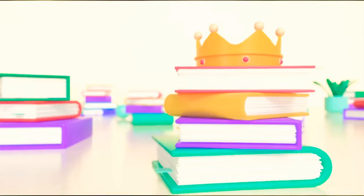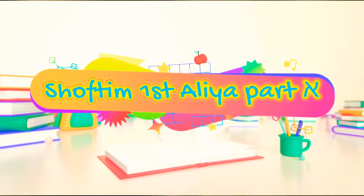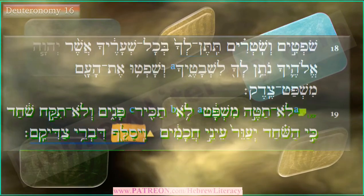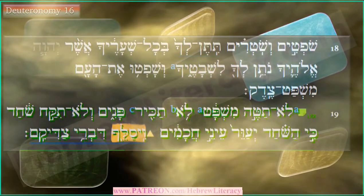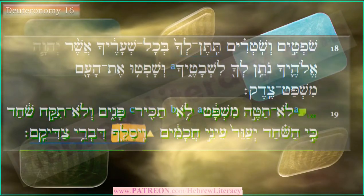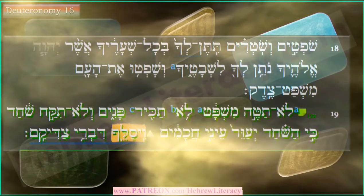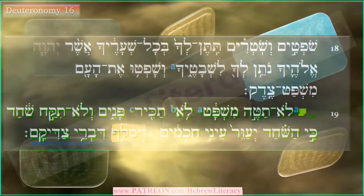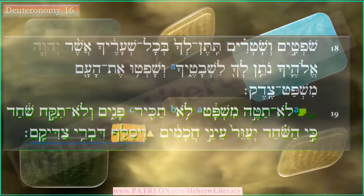Here we are on our Aliyah Yomi for inductive learning. We're going to be going into Deuteronomy chapter 16 starting with verse 18, that's where this week's parasha starts. Let's get our inductive learning on! Any questions before we start? Did anybody happen to take a look at this yet?